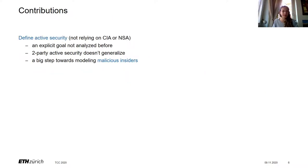This brings me to our contribution. First, we give the first definition of active security for CGKA that does not rely on CAA or NSA — this is an explicit requirement that has not been analyzed before. It's also non-trivial: it's not clear how to generalize two-party active security to groups, partly because in the two-party case, in case of an active attack, there is not much left to guarantee. Our definition is a big step towards modeling malicious insiders, though not all the way there, because we model an oversimplified PKI — we assume a non-corruptible and not very realistic PKI — for this first analysis of active security.